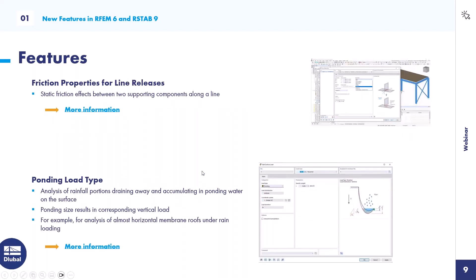New feature: calculation diagram type 2D Story — creation of result diagrams via building axis. This is necessary, for example, in seismic design to visualize the seismic force over the building height. Then friction properties for line releases: for example, for a concrete slab on a steel beam where you want to consider friction, you can define line releases. Then the ponding load type — you can consider rainfall and ponding where the program calculates the ponding size and converts it to vertical loads, mainly for membrane roofs.